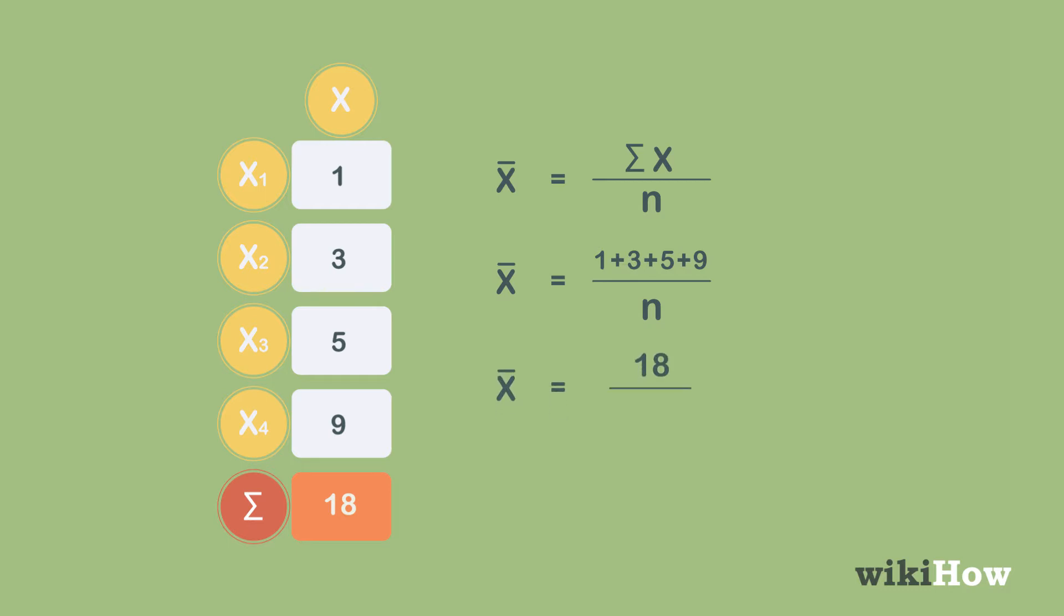Then you would divide 18 by the number of data points, which is 4, and get 4.5. Therefore, the mean of the sample is 4.5.